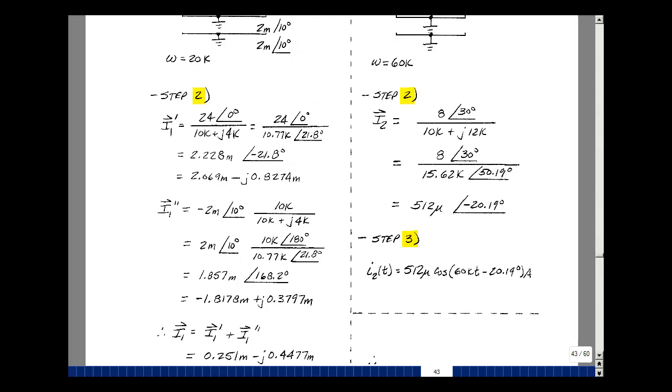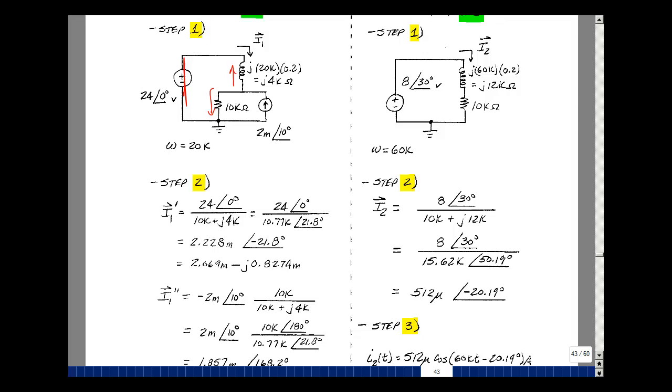Now let's go get I2. It's a little bit easier. We just have one source. So let's take the voltage and divide by the total impedance. So that's 8 at angle 30 over 10k now plus j12k. Pushing this in our calculator, I get a magnitude a little bigger than 12k. Angle is going to be more than 45 degrees, but in the first quadrant because this is longer than this, so this seems reasonable. Ratio of these two is 512 microamps, and the angle then would be 30 minus 50.19, so I get a minus 20.19.